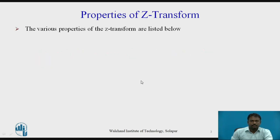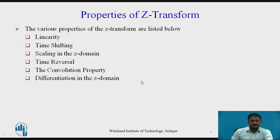The various properties of the Z-transform are as listed below: linearity, time shifting, scaling in the Z-domain, time reversal, the convolution property, and differentiation in the Z-domain.